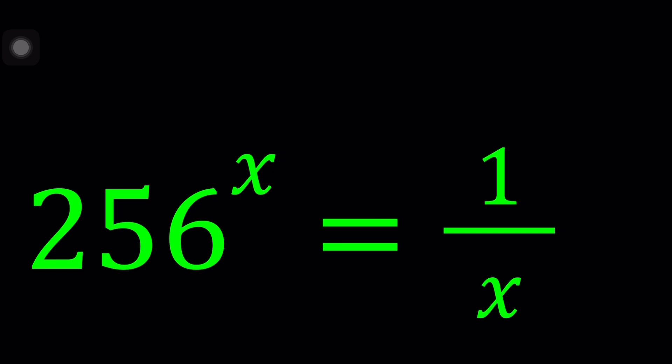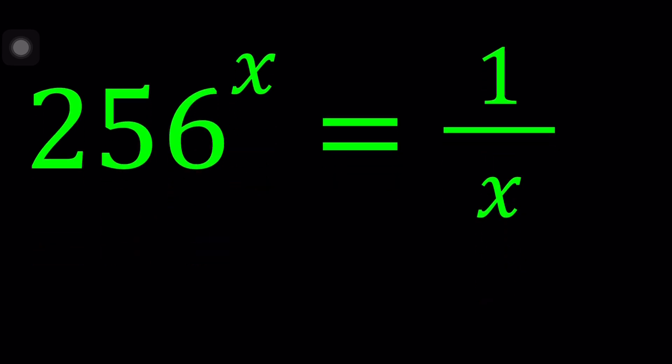The reason why I call this equation non-standard is because we have an exponential function on the left hand side, which is 256 to the power x, and on the right hand side we have a rational function. So there are different kinds of functions and to be able to solve this equation we have to use special methods. I'll be presenting two methods. Let's start with the first one.